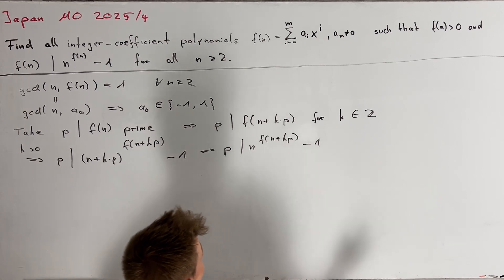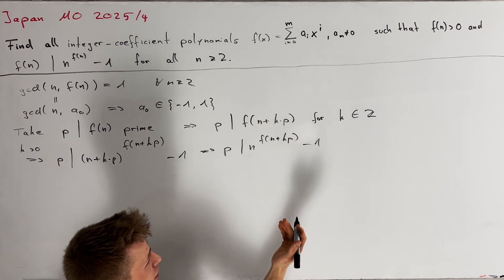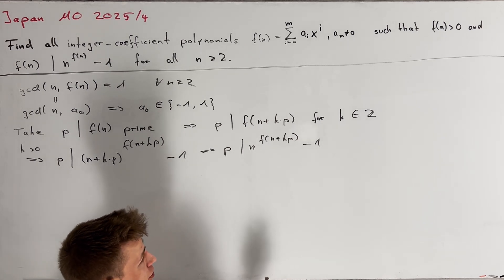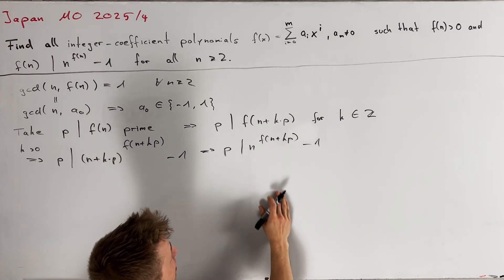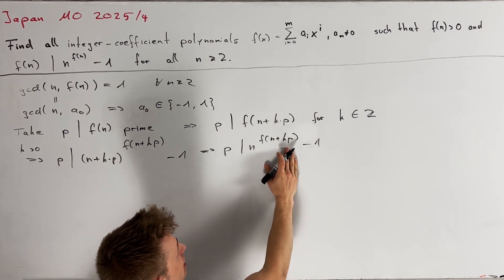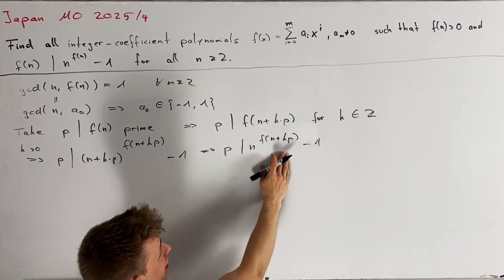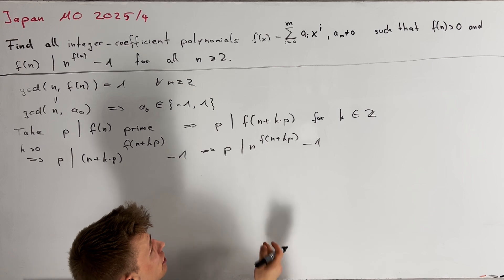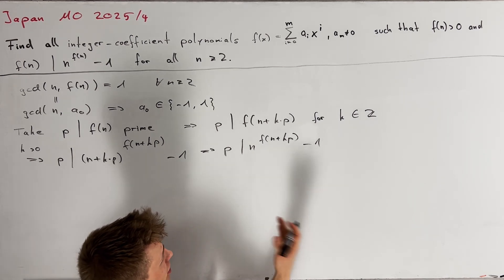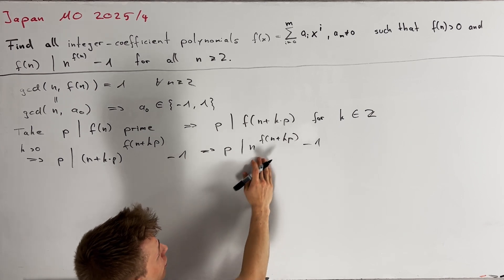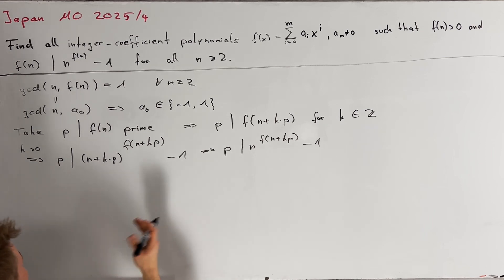We would like a nice exponent to control the right-hand side. Here, Fermat's little theorem comes in handy, telling us that n to the power of p minus 1 is congruent to 1 modulo p. So it would be useful to choose k such that n + k·p is divisible by p minus 1. Then f(n + kp) is congruent to a₀ modulo p minus 1, and the right-hand side becomes congruent to n to the power of a₀ minus 1 modulo p.